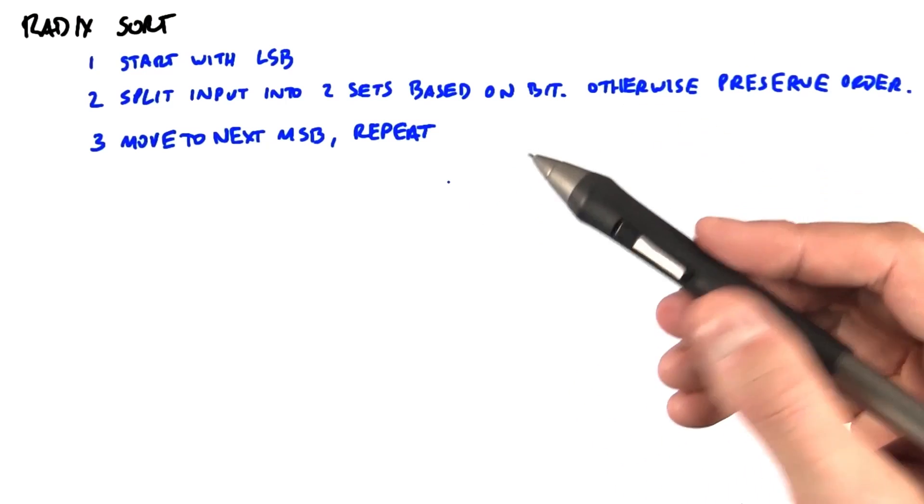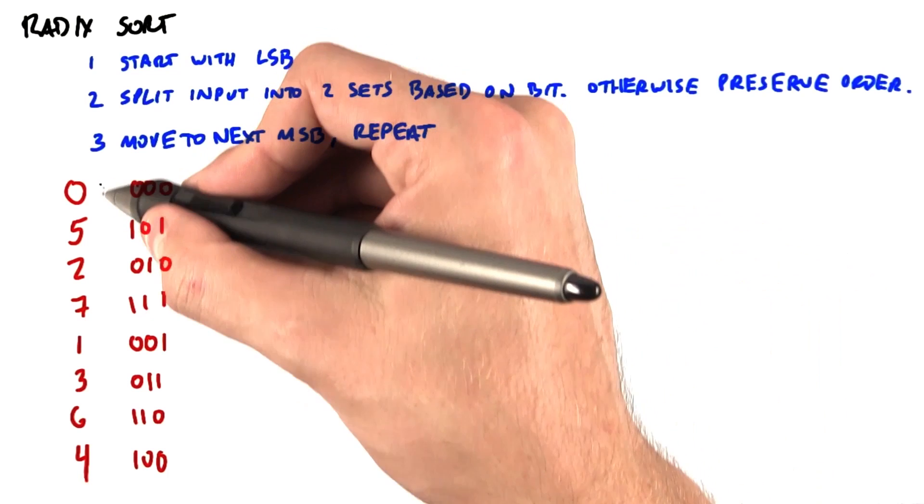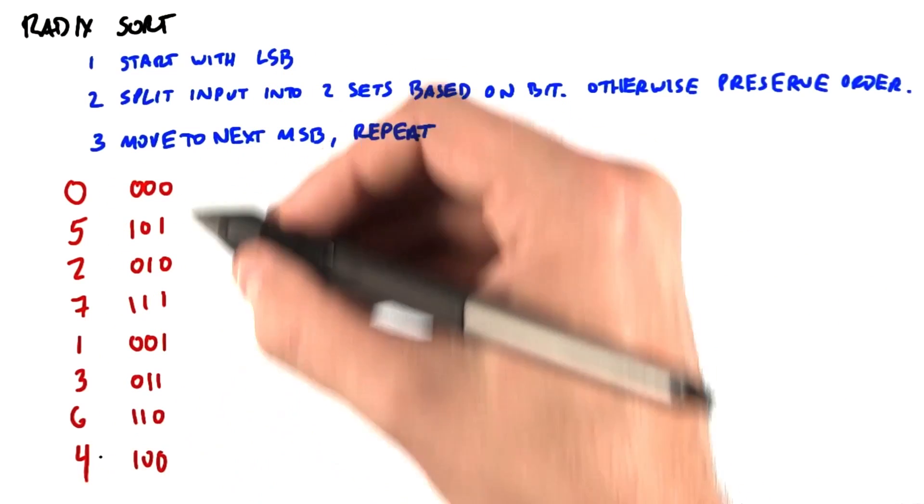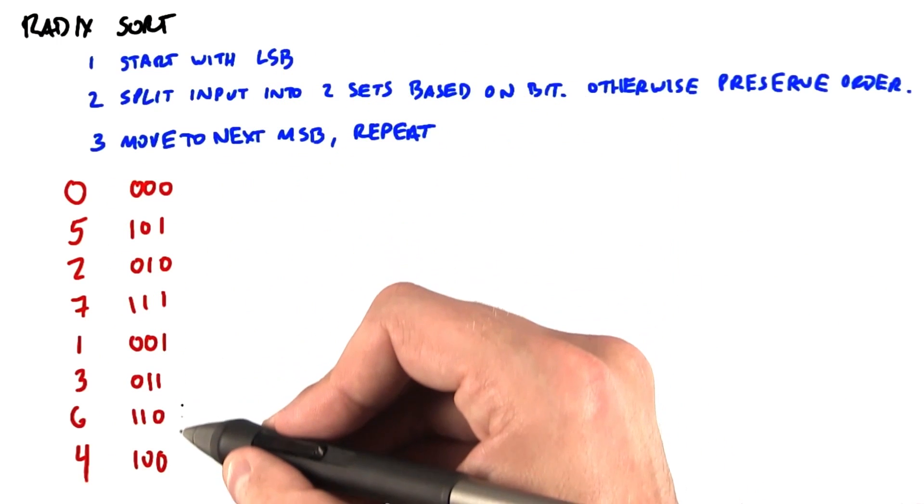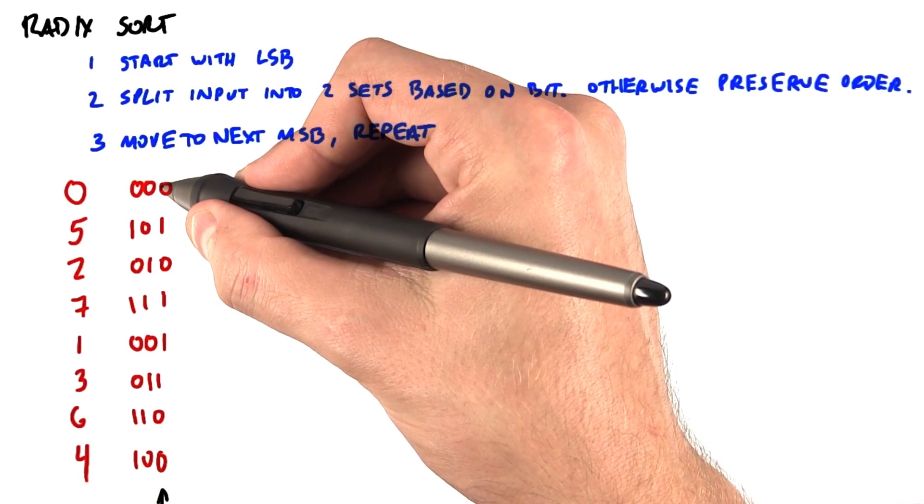So as usual, we're going to do an example that'll make more sense, and we're going to use unsigned integers. So what we're going to sort is this column of numbers to the left, and here is the binary representation of those numbers.